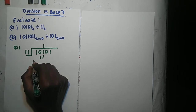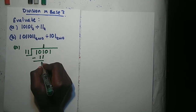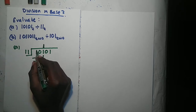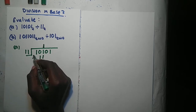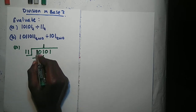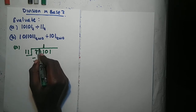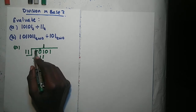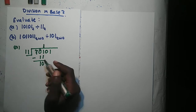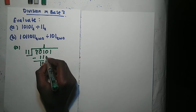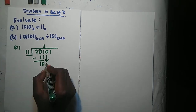We multiply: 1 times 11 gives us 11, and then we subtract. 1 minus 1 gives 0. For 0 minus 1 we need to borrow. One thing to understand is that when you borrow a 1 in base 2, it becomes a 2 on the other side — that's why it's called base 2. So you borrow the 1, you remain with a 0, and this position becomes a 2. So 2 minus 1 gives 1, and 0 minus 0 is just 0. Then 11 into 10 — it can't, so we bring down the next 0.